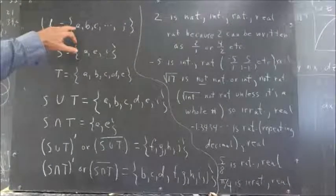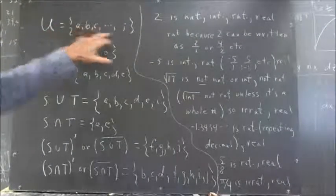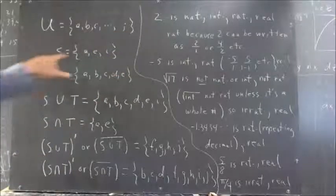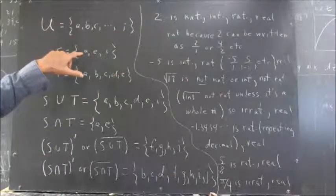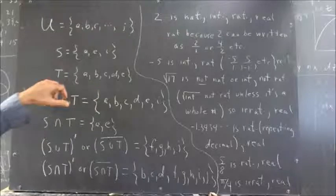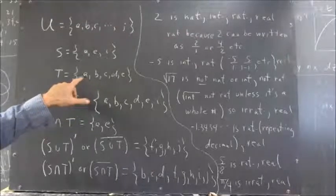If the universal set is a set of lowercase letters from A through J, S is a set consisting of lowercase letters A, E, and I, and T is the set consisting of lowercase letters A through E,